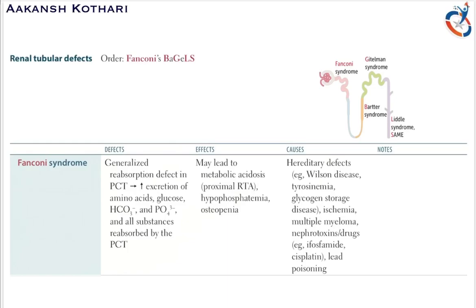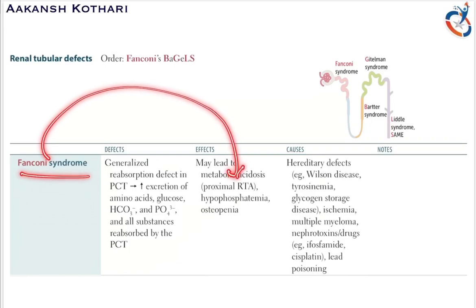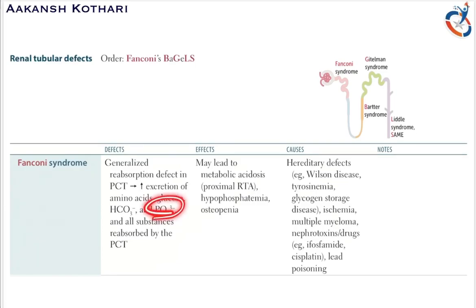The effects of Fanconi syndrome include metabolic acidosis. Since a lot of bicarbonate is lost in the urine, there is excessive generation of H+ ions, which leads to metabolic acidosis. It is related to something called proximal renal tubular acidosis, which is a type 2 renal tubular acidosis. So Fanconi syndrome is related to proximal renal tubular acidosis.